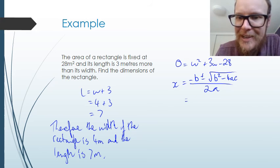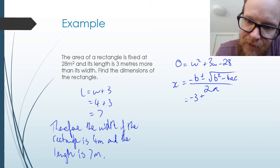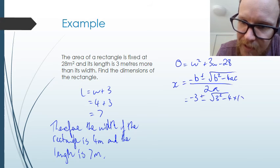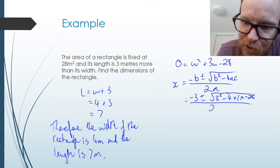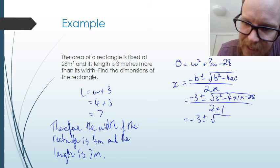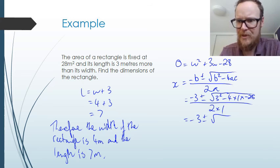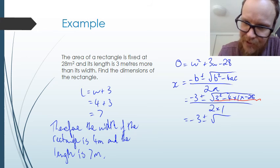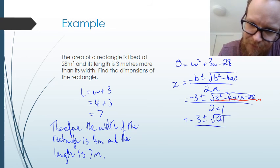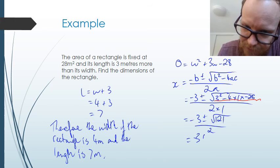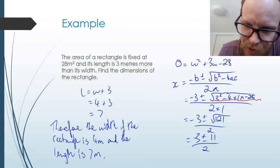Substitute in negative b. That's negative 3 plus or minus square root of 3 squared minus 4 times 1 times negative 28. There we go. All over 2 times 1. Negative 3 plus or minus. And if I put all of this in my calculator, all of the discriminant, this thing here, if I put all that in my calculator, I get 121 over 2. That's negative 3 plus or minus 11 over 2.